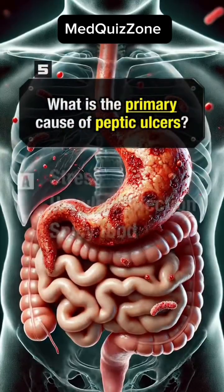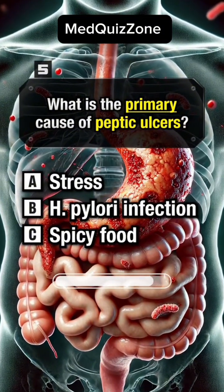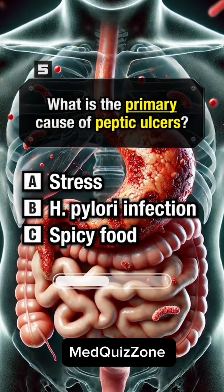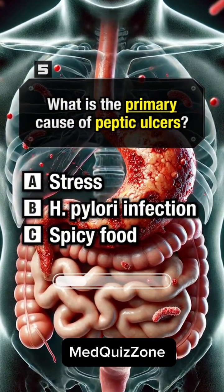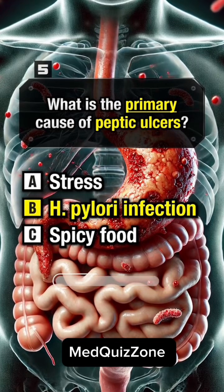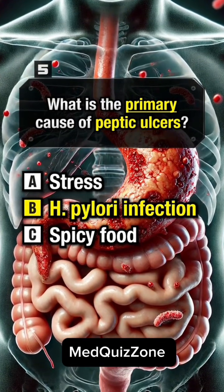What is the primary cause of peptic ulcers? Answer B. H. Pylori infection.